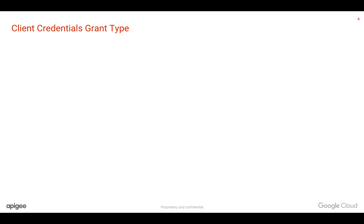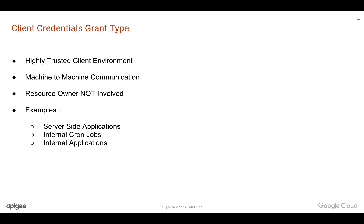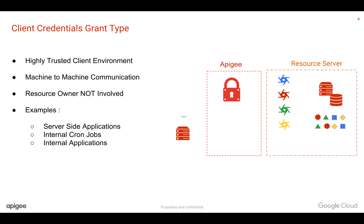The first one is the client credentials grant type. It is used in highly trusted client environments, generally in machine-to-machine communication where applications are talking to applications and the resource owner or end user is either not involved or consent is not required. Examples include server-side applications, internal cron jobs, batch jobs, or internal applications trying to access APIs and associated data.